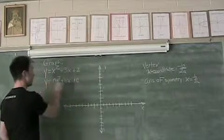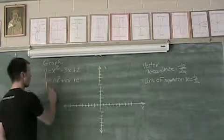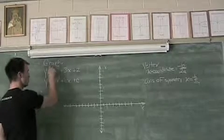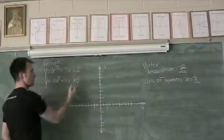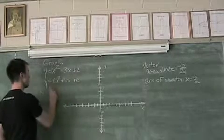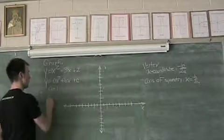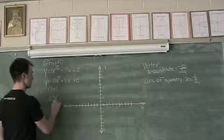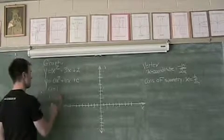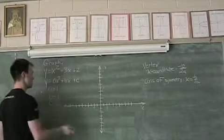So as you can see, in this example, y is equal to 1 times x squared plus 3 times x plus 2. So our a value is 1, our b value is a positive 3, and the c value is equal to 2.